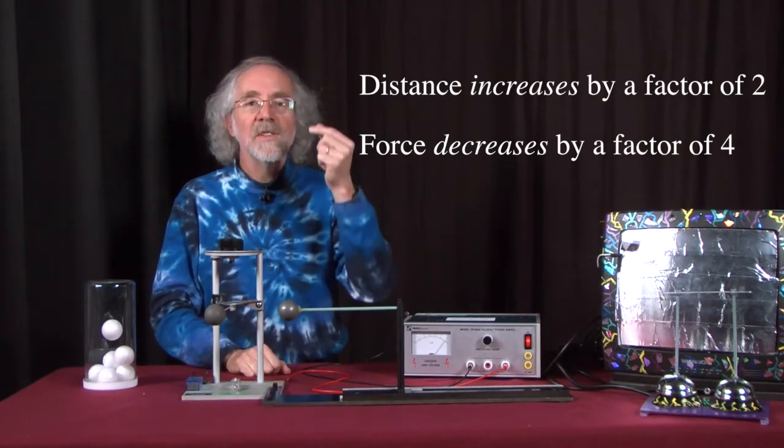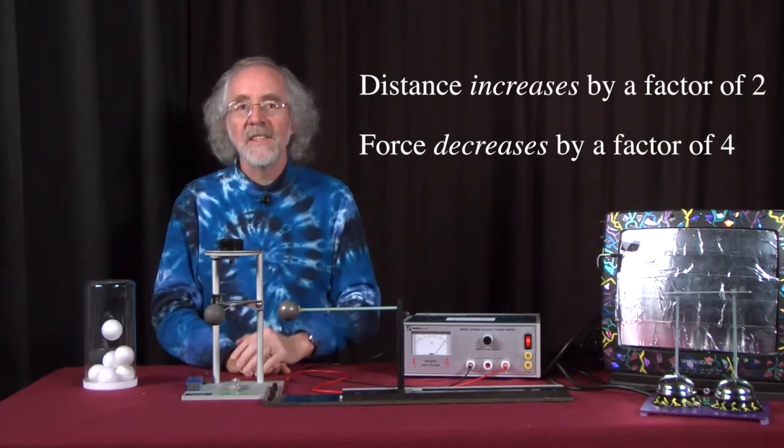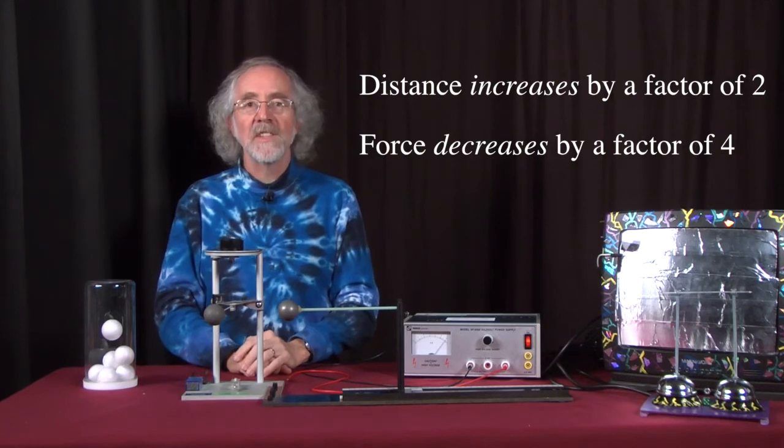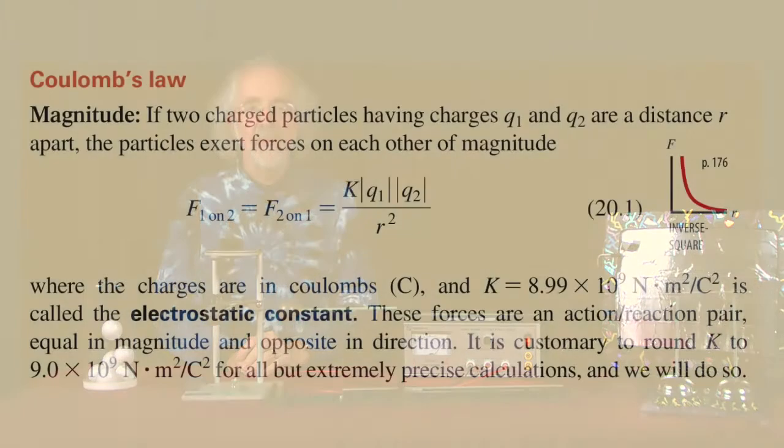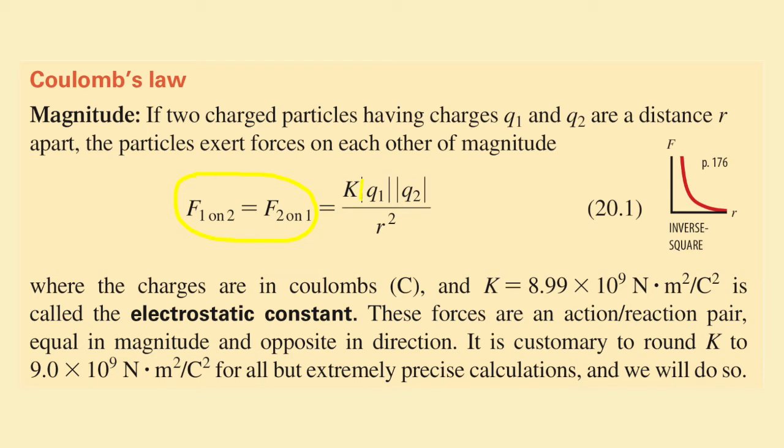So the force is proportional to 1 over the square of the distance. And that's something you'll learn about in Chapter 20 that we call Coulomb's Law. The force is proportional to the magnitudes of the two charges and it's inversely proportional to the square of the distance between the two centers.